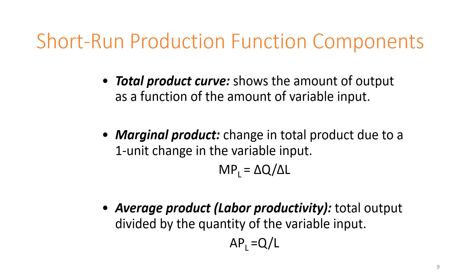In the graphs that follow, we'll see the total product curve, which is a representative line of the amount of output as a function of the amount of variable input. The marginal product is the change in total product due to a single unit of change in the variable input, derived by taking the change in quantity over the change in labor. Average product, or labor productivity, is the total output divided by the quantity of the variable input — that is, quantity of output divided by labor.